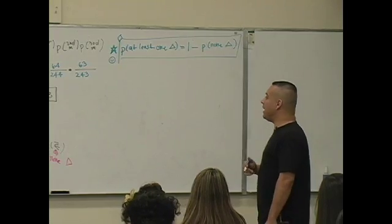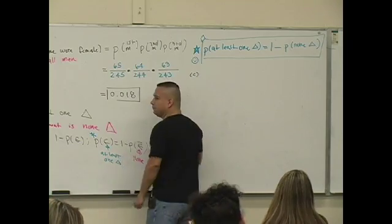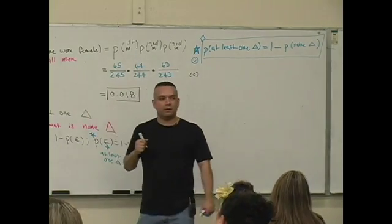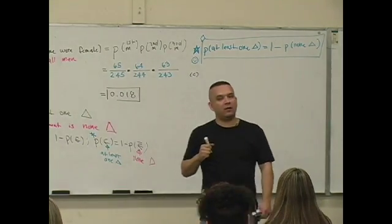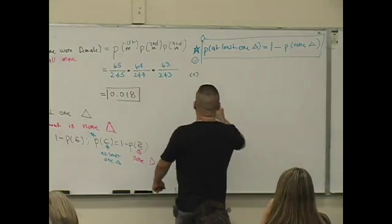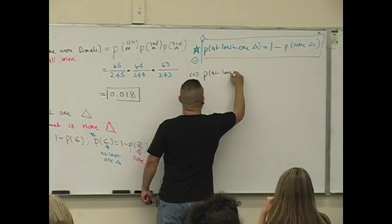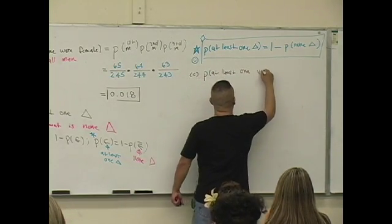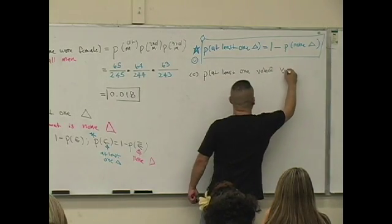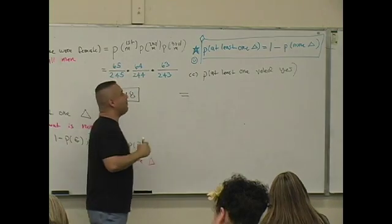For example, question C. What does question C say? At least one voted yes. So you're looking for the probability that at least one person voted yes. You guys see that there? What is that equal to by this complement rule?